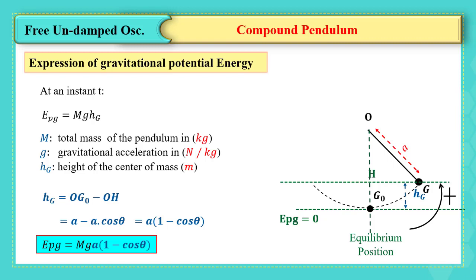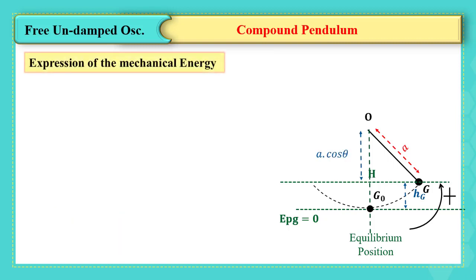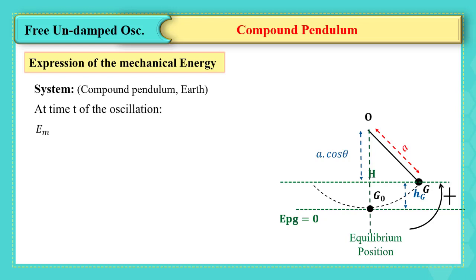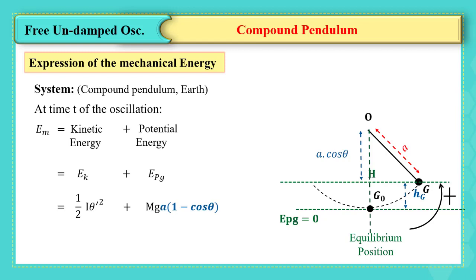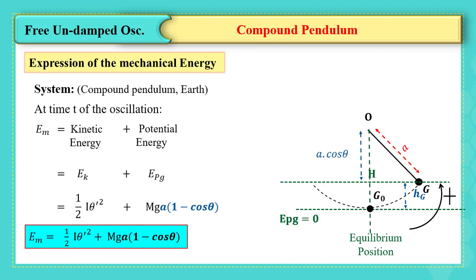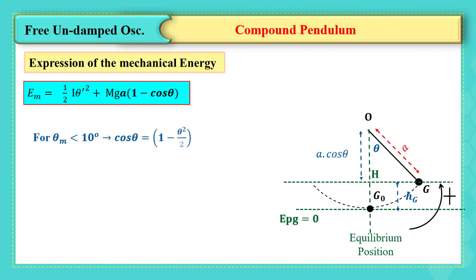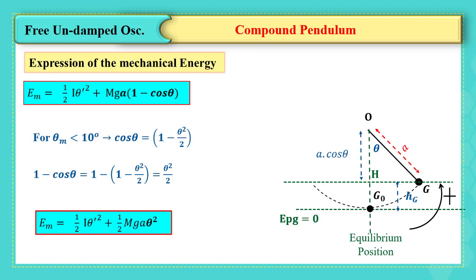The mechanical energy of the compound pendulum-Earth system at any time t is kinetic plus gravitational potential energy: E = ½Iθ'² + Mga(1 − cos θ). For θ_max less than 10°, we use the small angle approximation: cos θ ≈ 1 − θ²/2, which gives 1 − cos θ ≈ θ²/2. Therefore the mechanical energy simplifies to E = ½Iθ'² + ½Mga·θ².